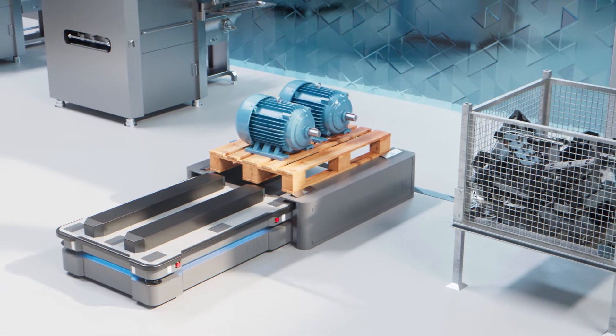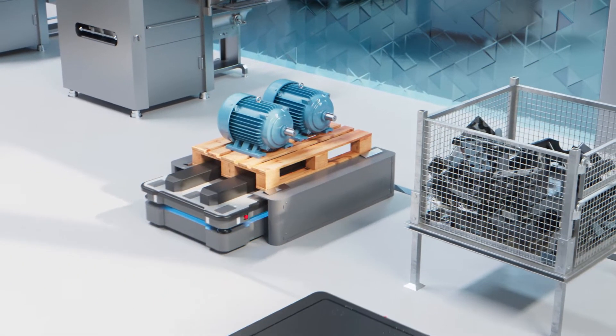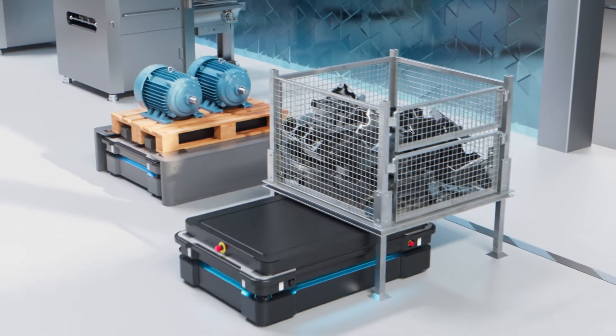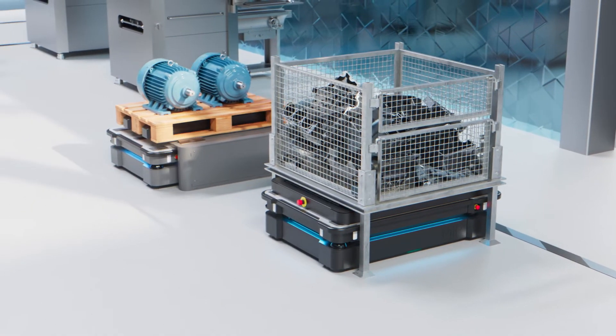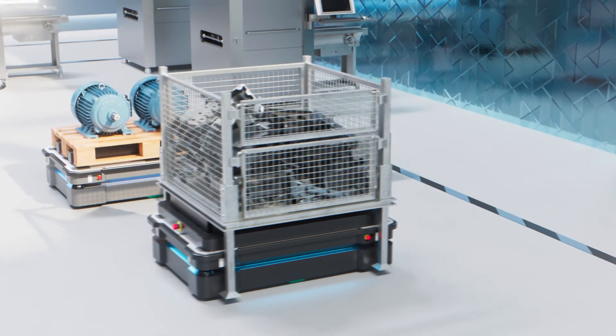The MiR 600 can carry payloads weighing up to 600 kilos, and the MiR 1350 can transport payloads up to an astonishing 1,350 kilos.